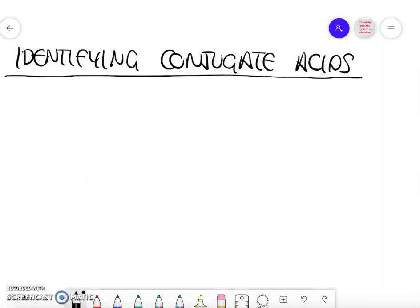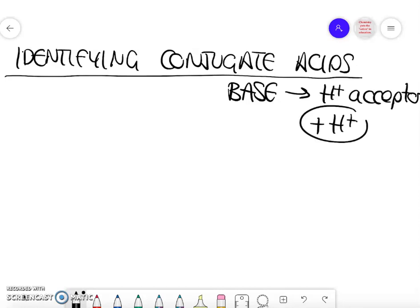So now we're going to look at identifying conjugate acids. So what does that mean? That means that something is acting, your substance is acting as a base. And according to Bronsted-Lowry, a base is a proton acceptor. So we will be adding a H plus onto our final answer.